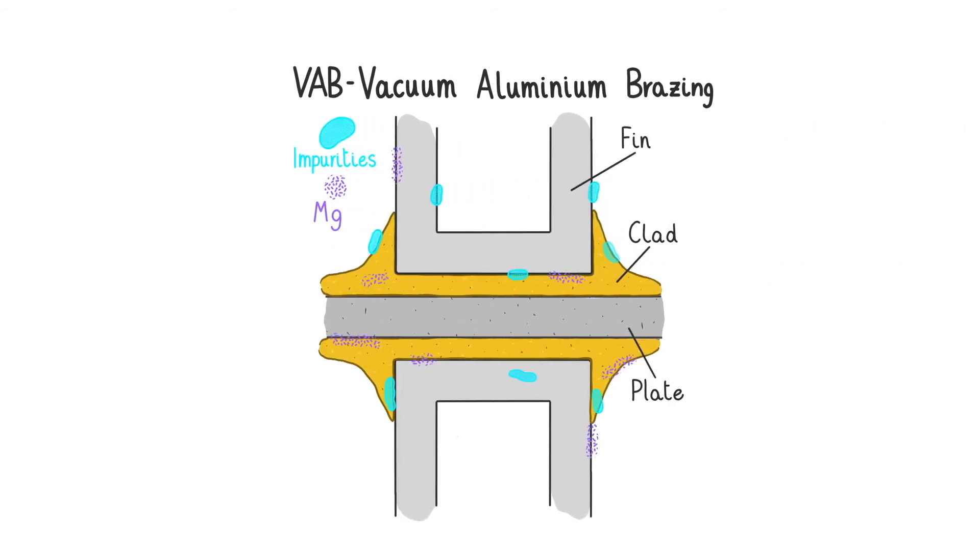In OASI we use a vacuum aluminum brazing called VAB, which allows us to remove impurities and magnesium released during the melting phase. It is a batch process, ideal to produce medium quantities of heat exchangers used in heavy duty applications.